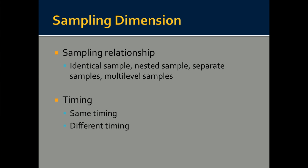Through the sampling dimension, researchers consider the sampling relationship and the timing. The sampling relationship considers the relationship of the qualitative and quantitative sample — it can be an identical sample, a nested sample, separate samples, or multi-level samples. Second is timing: data collection may occur at the same time, or at different times for the qualitative and quantitative data.